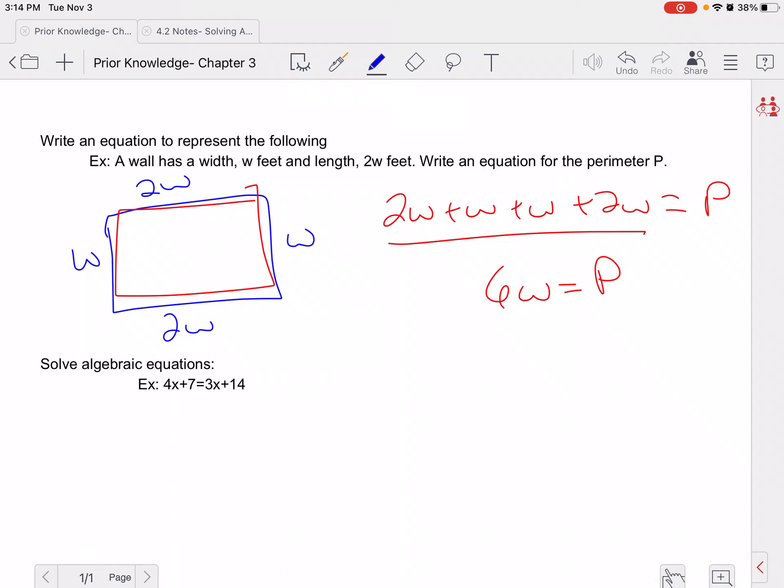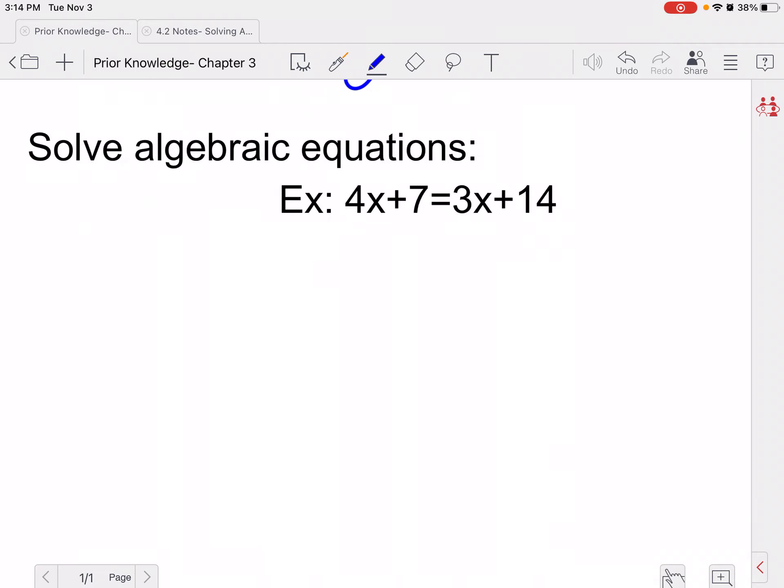Let's talk about solving some more complicated equations here. So remember, we can always draw our line through our equal sign. We talked about this in review at the beginning of the year as well. And I always like to get my variables together first. You don't have to, but it just tends to make things easier for students. So 4x minus 3x would be x plus 7 equals 14. I would go ahead and subtract my 7, so I get x equals 7.